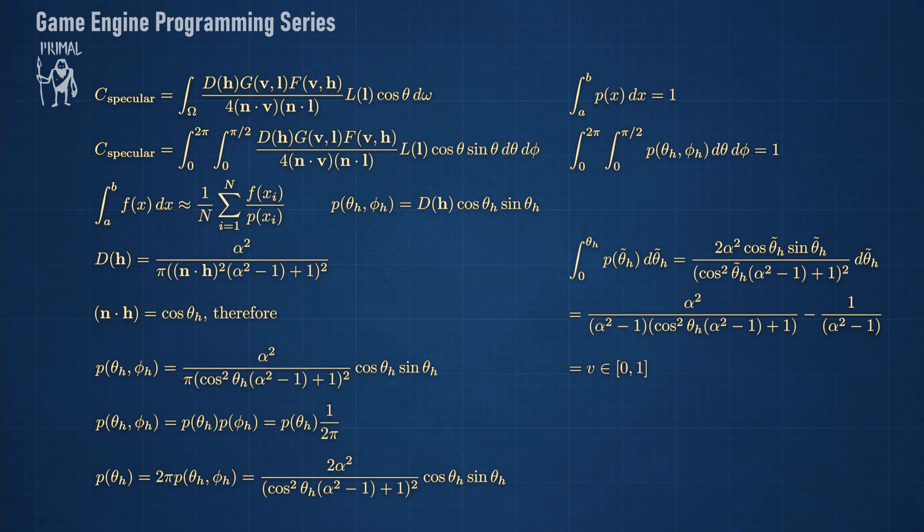We can also solve the integral for some random theta between 0 and pi over 2. This will always return a random value between 0 and 1. Inverting this function will express theta_h in terms of this random value. This is how uniform random values are mapped to the parameter space of the sum.